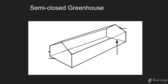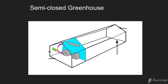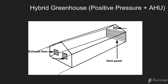The semi-closed greenhouse uses that same mechanical system, but also takes advantage of exterior air when the humidity and temperature of that air is helpful to achieving the set points inside the greenhouse — sort of the best of both worlds. And that approach can be applied to the other design styles we've seen.